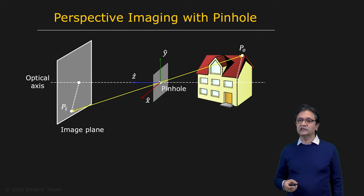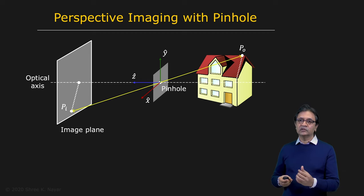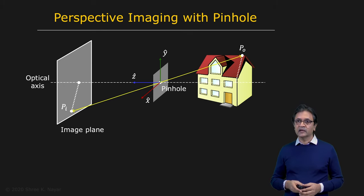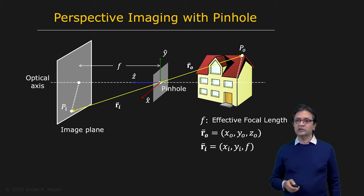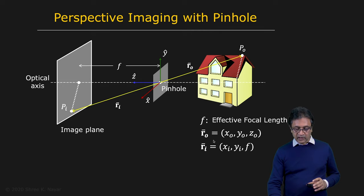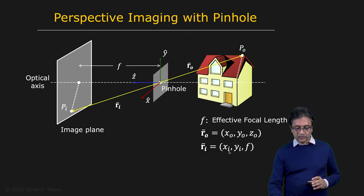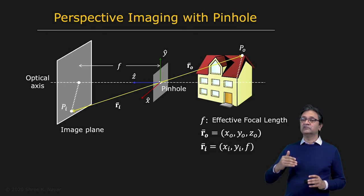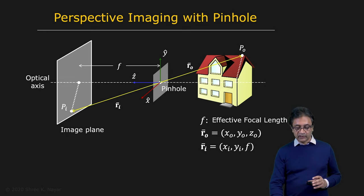To understand that relationship, we erect a coordinate frame XYZ — a three-dimensional coordinate frame — placed at the pinhole with the Z axis pointing along the optical axis. The optical axis is the axis perpendicular to the image plane. The Z axis points towards the image plane and lies on the optical axis. The distance between the pinhole and the image plane is called the effective focal length, F. We write point P0 using vector R0 with coordinates X0, Y0, Z0. Its image is RI with coordinates XI, YI on the image plane, and the Z coordinate is always F — the effective focal length — regardless of where the point lies in the 3D scene.